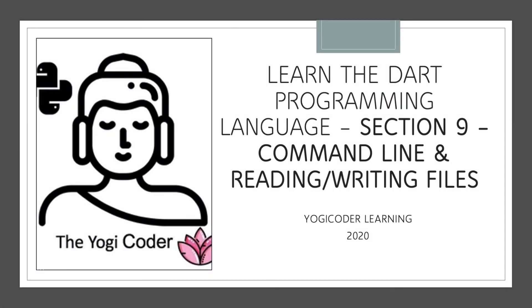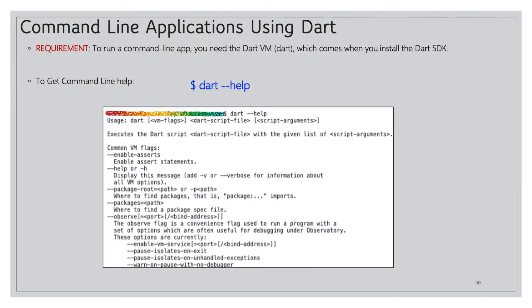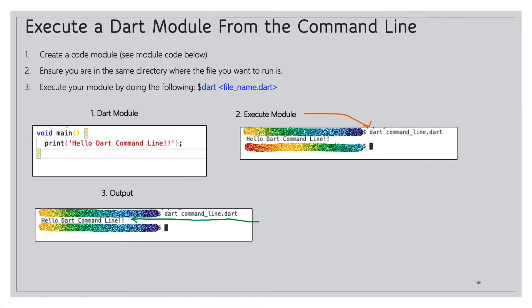Welcome back. This is section 9 of our series on learning the Dart programming language. We're going to cover command line utilities today — reading from and writing to files. To run a command line application from Dart, you need the Dart VM that comes with the SDK. Once installed, you can get command line help by running `dart --help`. There's really no difference from running it through VS Code.